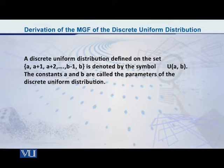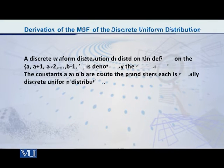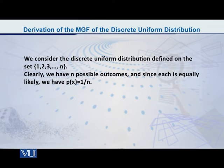The MGF which I will present to you, I would like to do it for the simple case, that simple case when a is equal to 1 and b is equal to n. In other words, I am talking about that particular discrete uniform distribution which is defined on the numbers 1, 2, 3, and so on up to n.